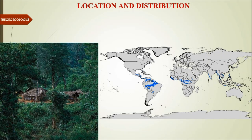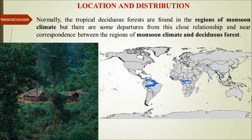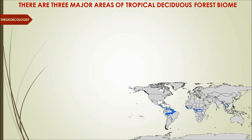Let's understand the location and distribution of the monsoon deciduous forest biome. Normally, tropical deciduous forest biomes are found in regions of monsoon climate — that's why it is also known as monsoon deciduous forest. Basically it's the tropics where this kind of forest biome exists. There are three major areas of tropical deciduous forest biome: the first is Neotropics, mainly the West Indies section.